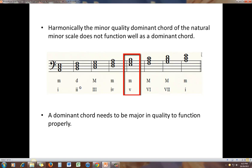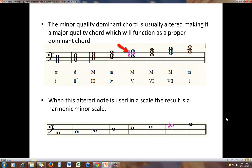Harmonically, the minor quality dominant of the natural minor scale does not function well as a dominant chord. I said earlier that the dominant is that chord which sends you back home to the tonic. And when this dominant chord is minor in quality, it just doesn't do its job properly. So in a minor key, the dominant chord is usually altered, making it a major chord so it will function properly.